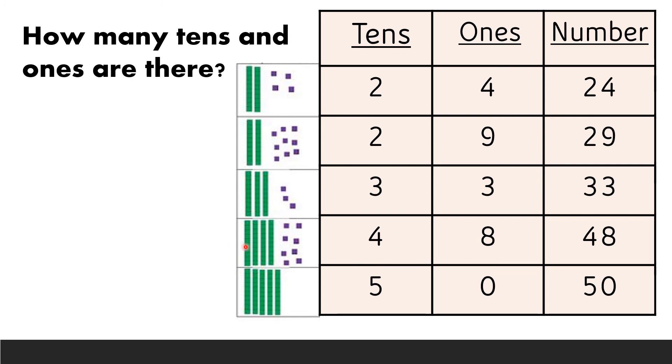Over here we have a group of four tens: 1, 2, 3, 4. So, we will write over here four. And how many ones do we have? 1, 2, 3, 4, 5, 6, 7, 8. We have eight ones. So, the number will be 48.